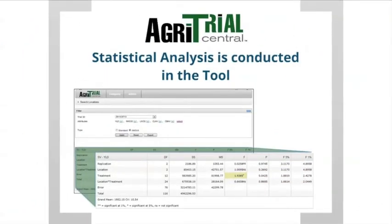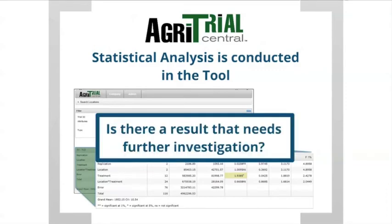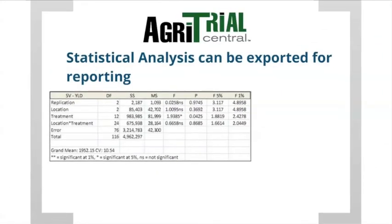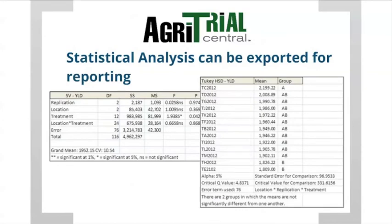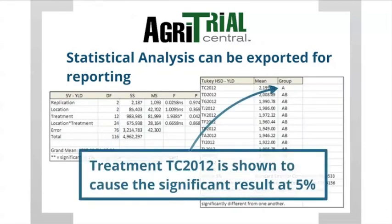AgriTrial Central can also conveniently run statistical analysis for you. This helps you determine if the results you are seeing are statistically significant and warrant further consideration for testing. The significance hurdles can be set at 1%, 5%, 10%, or 20%. Using the export tool, it's easy to pull the ANOVA tables for each attribute into Excel. The tool includes mean separation and homogeneity of variance tests, including the Tukey HSD test to determine which treatments or hybrids are causing the significant event.